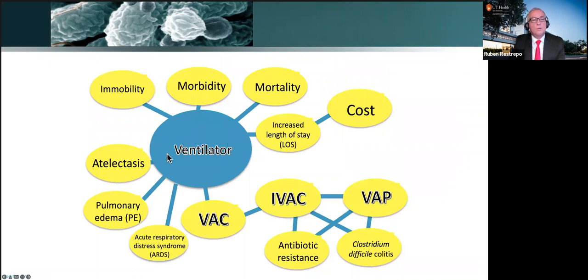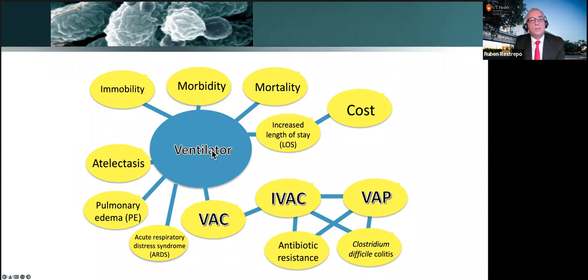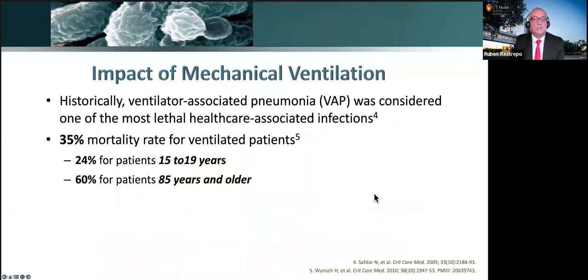Once we put a patient on the ventilator, as much as we want to save lives, there are many ventilator-associated complications. The patient is unable to move; we can cause morbidities. We can even cause ventilator-induced lung injury. Many of these complications now have clear definitions — that's why we have VAC, IVAC, and VAP.